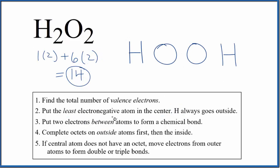Next, we're going to put electrons between atoms. That's going to form the chemical bond. We put two electrons between atoms. So far we've used six valence electrons for H2O2, but we have 14.